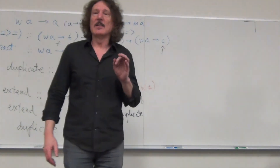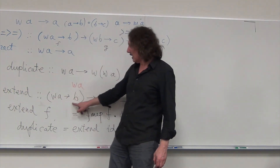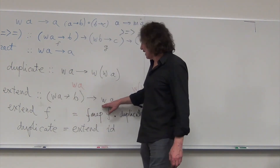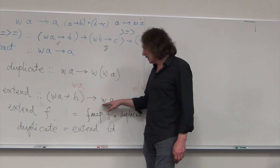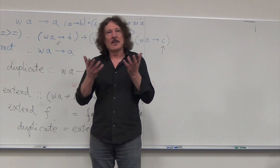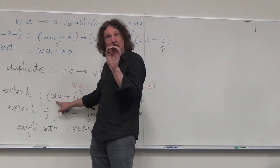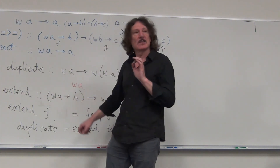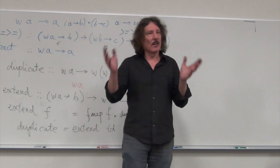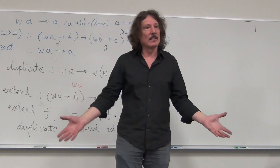Extend sort of says: I have this way of manipulating the universe. I have this localized Kleisli arrow, W A to B. So it takes a localized Kleisli arrow and takes the comonadic value. This is like a way — if you give me a container with some predetermined focus, I will produce some value for you. The important thing is that it has this context. It doesn't just have this single value, but it has some neighborhood, some context around it.